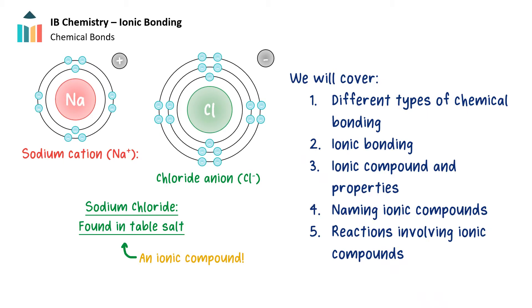Ionic bonding is one of the major mechanisms of chemical bonding in general, and chemistry is all about bonds. In this video, we will first quickly cover the different types of chemical bonding, then go on to describe ionic bonding in particular, then go over some properties of ionic compounds, how to name these compounds, and finally some chemical reactions which involve these ionic compounds.